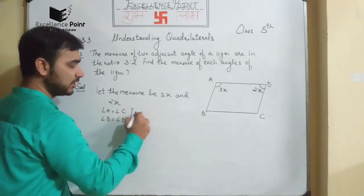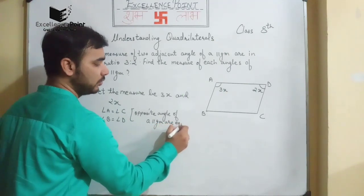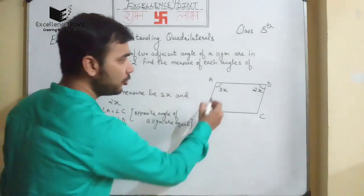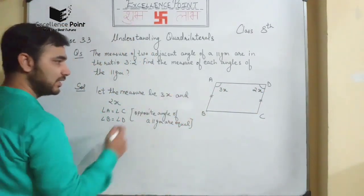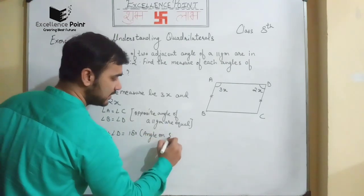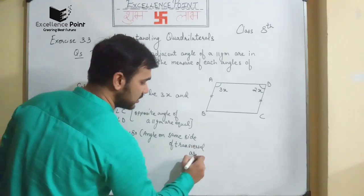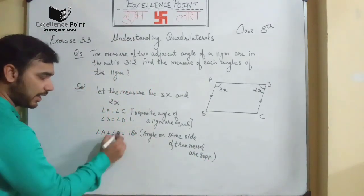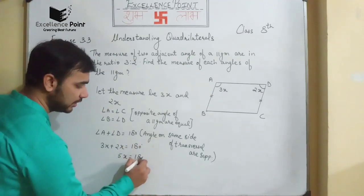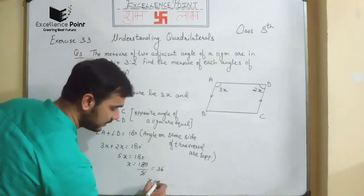We know that opposite angles of a parallelogram are equal, so angle A equals angle C and angle B equals angle D. Also, angle A plus angle D equals 180 degrees because angles on the same side of a transversal are supplementary. So 3x plus 2x equals 180 degrees, giving 5x equals 180 degrees, and x equals 36 degrees.